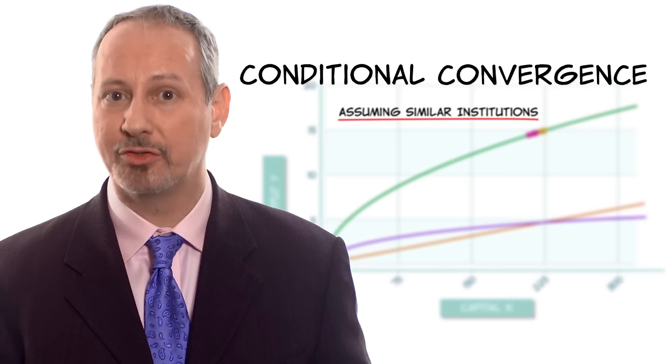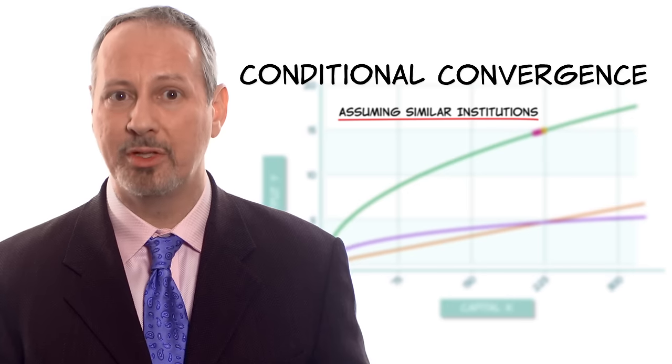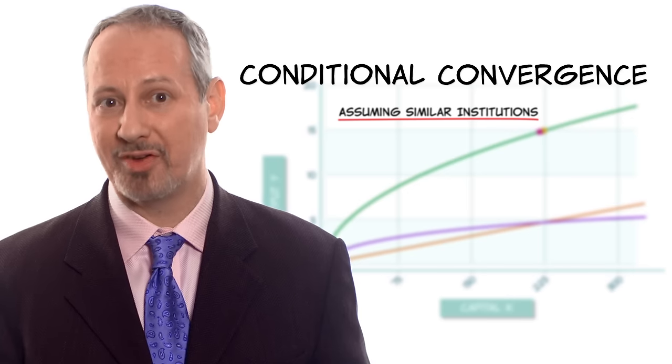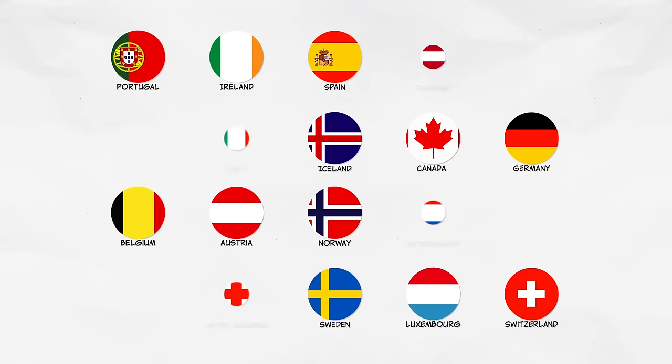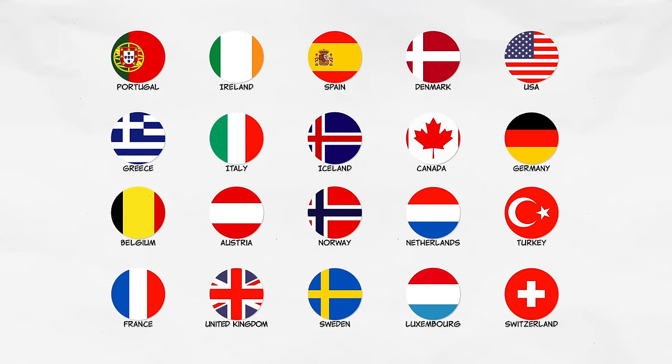Conditional on institutions and other factors being similar, we'd expect poor countries to grow faster. Is it true? Let's take a look at the 20 founding members of the OECD, basically the Western developed economies. It seems reasonable to say that they've got similar institutions. So according to the Solow model, they should have similar steady state levels of output.